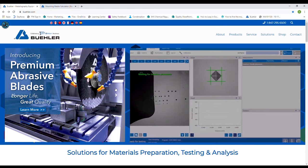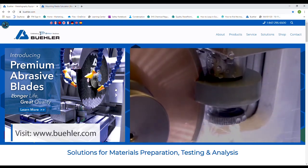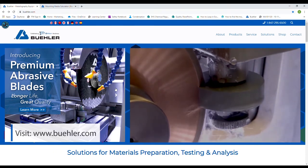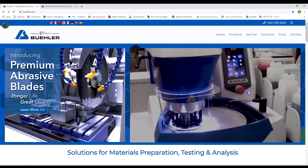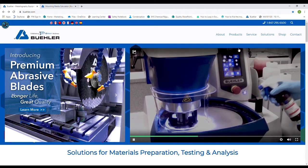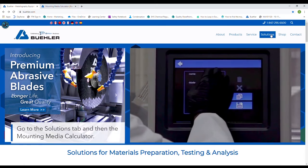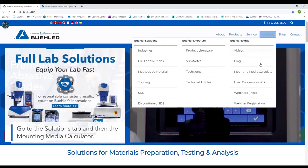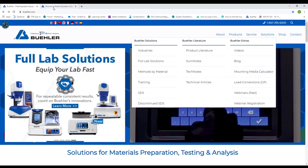The first thing you want to do is determine how much mounting media you're going to use. If you go to www.buehler.com, we have a handy tool that can help you figure this out. Go up to the right hand corner, solutions tab, and then go down to the mounting media calculator.